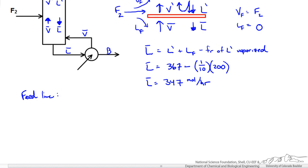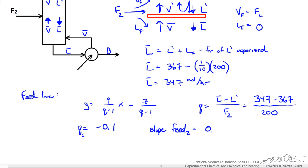Our feed operating line we have derived before. It is related to our Q by the following equation. We only need L bar to calculate Q because Q is the amount of liquid that crosses our feed plate in comparison to the amount of liquid that entered our feed plate. In this case it would be L bar minus L prime over F2. When we plug numbers in and solve for our Q we get negative 0.1. So we get a slope of 0.09.